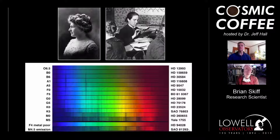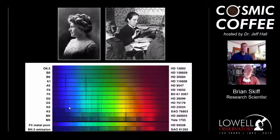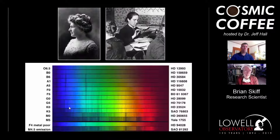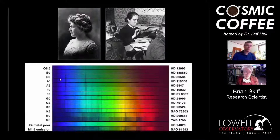Through the 1930s, once we had atomic theory and could calculate where the lines should show up, Bill Morgan and Philip Keenan at Yerkes Observatory codified the stellar classification system in two dimensions: the temperature sequence that Annie Cannon had done, and then another dimension specifically for the luminosity of the stars. This two-dimensional MK classification has come a long way and allows us to extract a fraction of the tremendous amount of information that the stars are broadcasting about themselves.